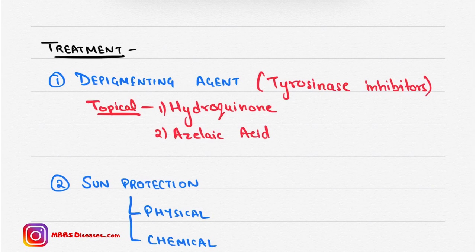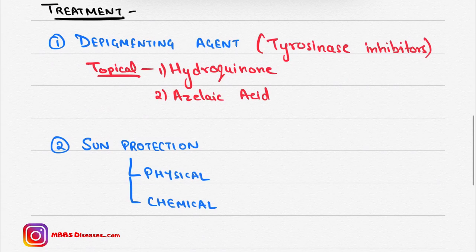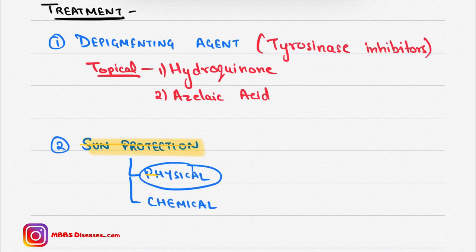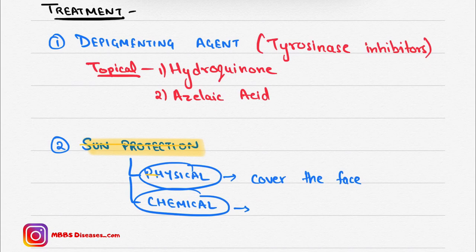Another part of treatment is sun protection, which is also important because UVB exposure can cause melasma. Sun exposure can be prevented either physically or chemically. Physically, we can prevent it by covering the face. Chemically, we can prevent it by applying sunscreen.